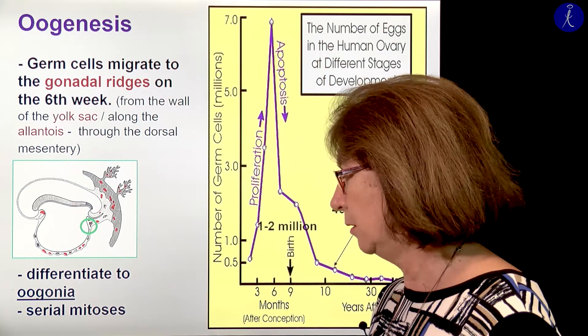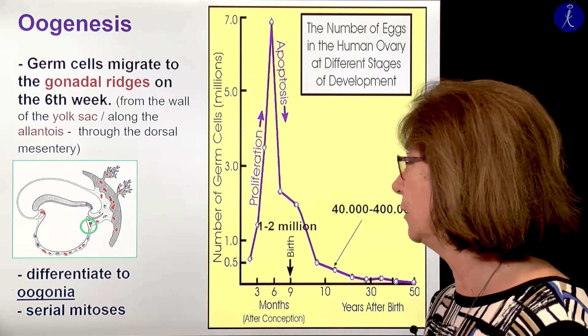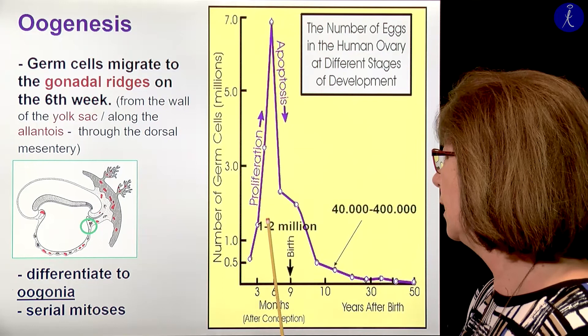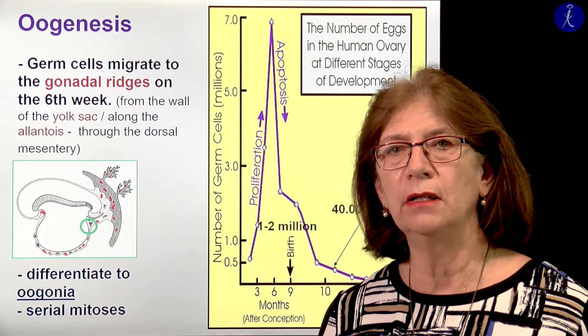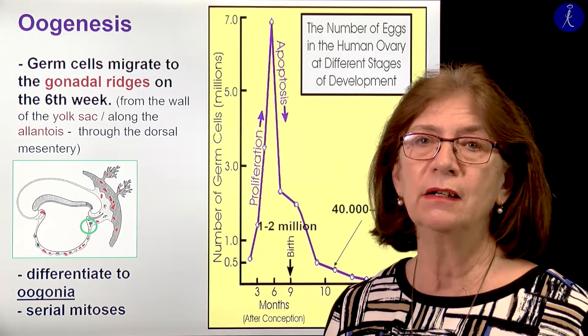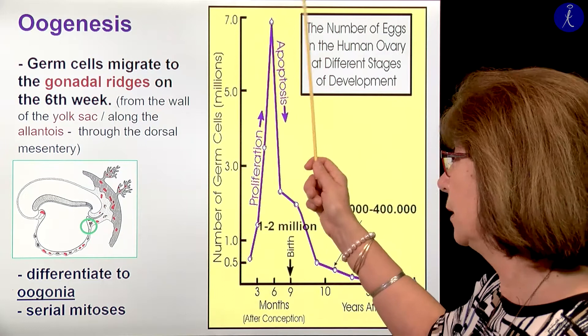Here they differentiate to oogonia and do serial mitosis, reaching a maximum number of 7 million about in the fifth fetal month. Is 7 million a lot? In one microliter of blood you have 5 million red blood cells, so it's already understandable that 7 million is not a lot. But this is the maximum number of oogonia that exists in the entire life of a female.